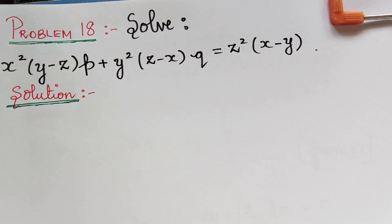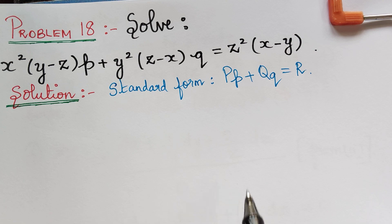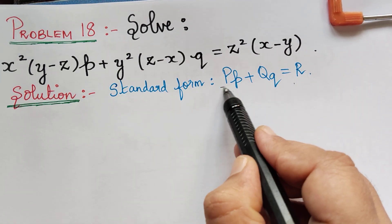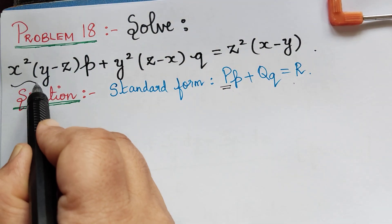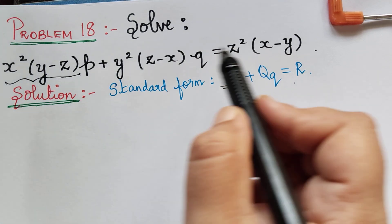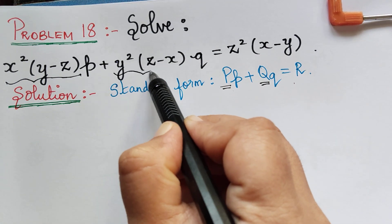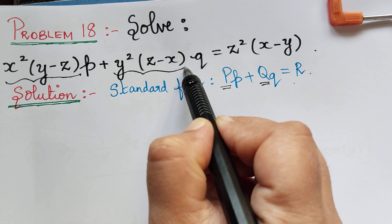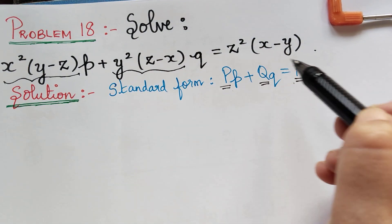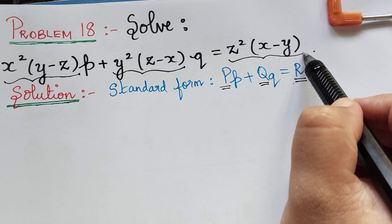The standard equation is given by this form. On comparing with the standard form, we get the value of capital P to be equal to x squared multiplied with y minus z. The value of capital Q is equal to y squared multiplied with z minus x, and the value of capital R is z squared multiplied with x minus y.